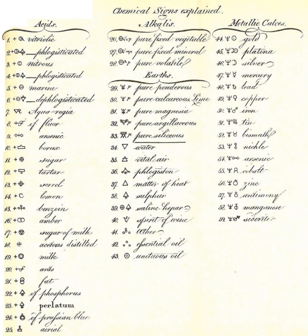Mundane elements include: Antimony, Arsenic, Bismuth, Boron, Lithium, Magnesium, Phosphorus, Platinum, Potassium, Sulfur, and Zinc.